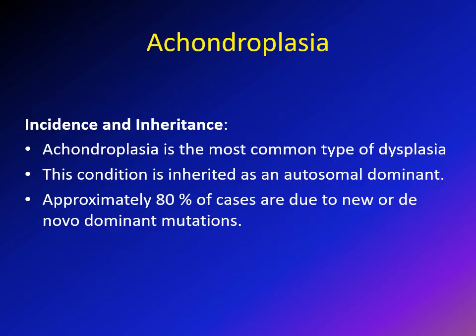Achondroplasia is by far the most common type of all bone dysplasias. The condition is inherited as autosomal dominant — this is very important.